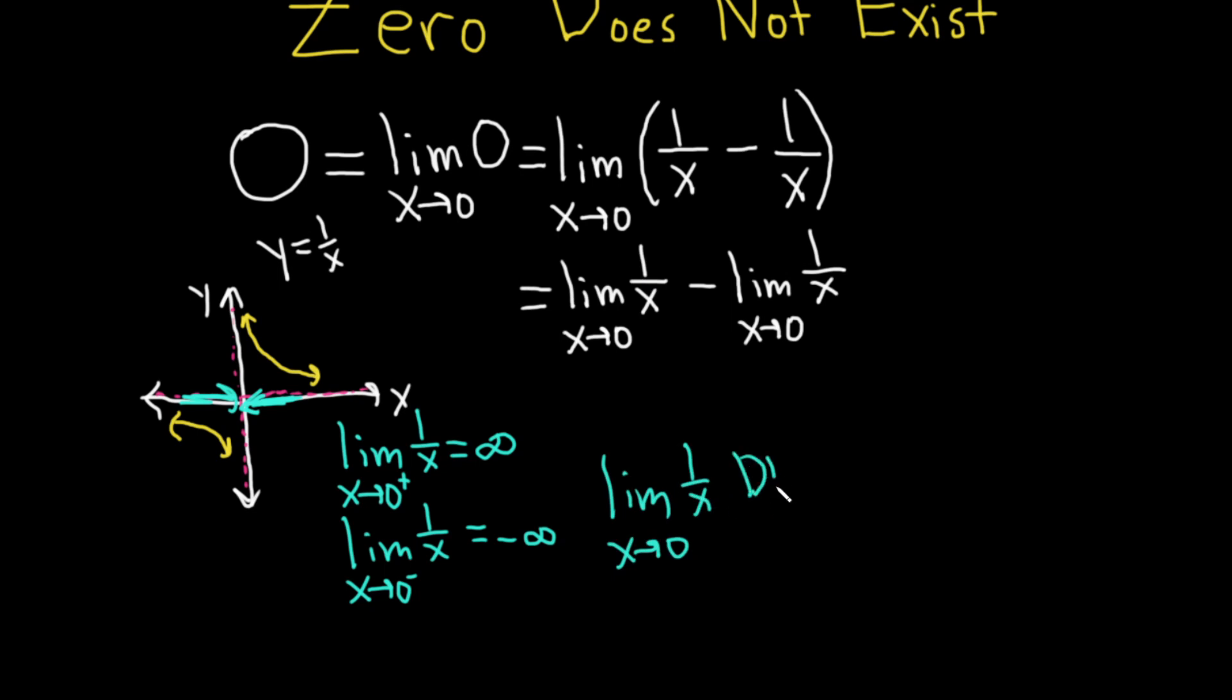This limit does not exist. So we write that as DNE. But neither does this one. So none of this makes sense. So none of this exists. So this does not exist.